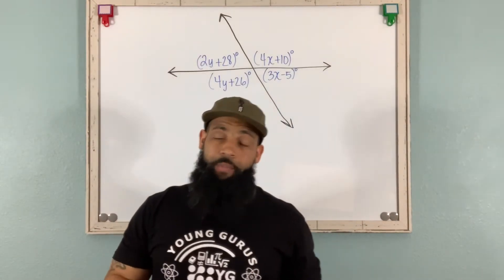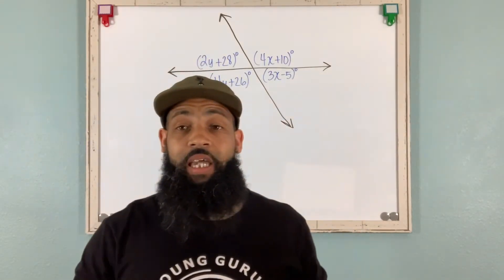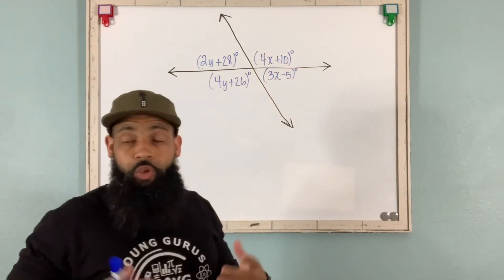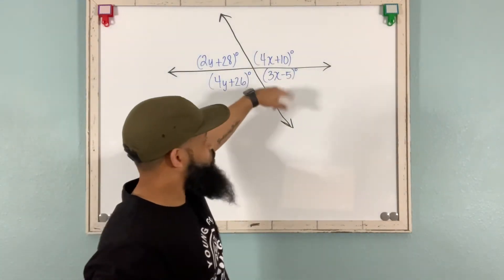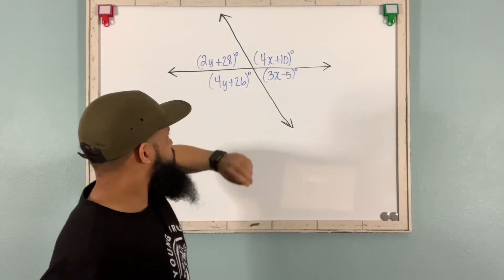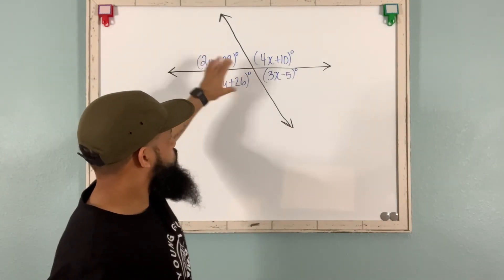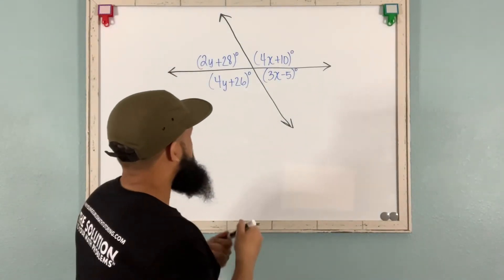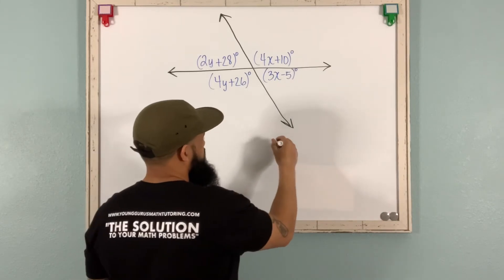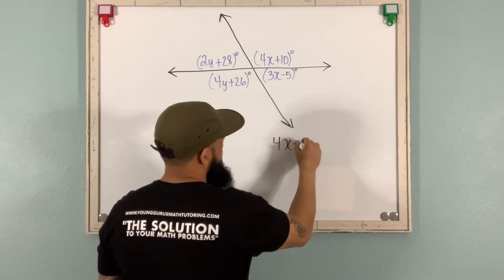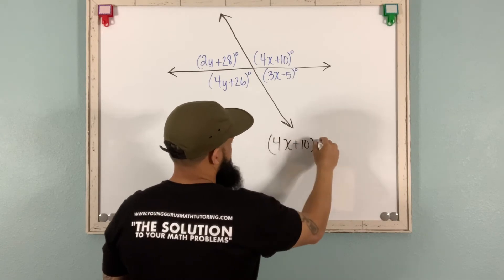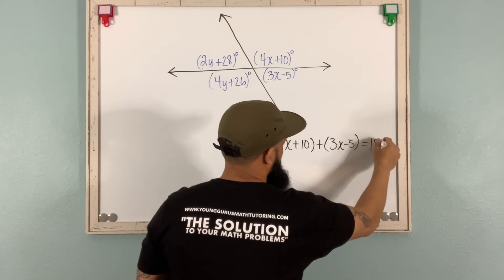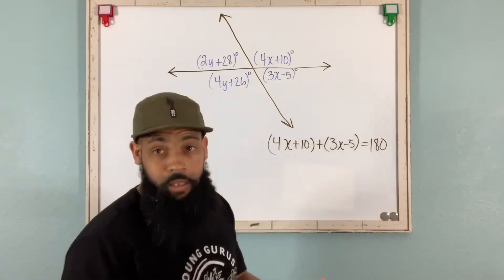We have one last example. And once again, this one has the x and the y variables. Notice these two expressions use the variable x, and they form a linear pair. These two expressions use the variable y, and they form a linear pair. So let's go with x first. So 4x plus 10 plus 3x minus 5 equals 180.